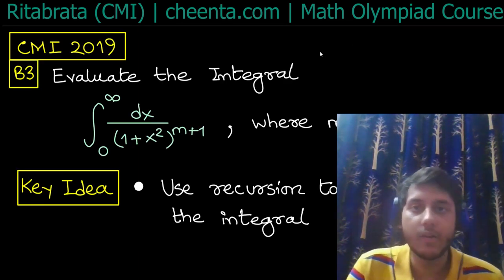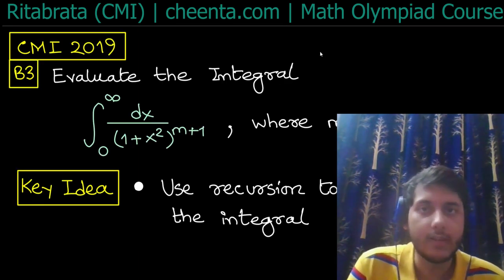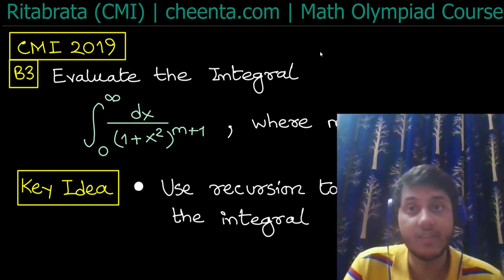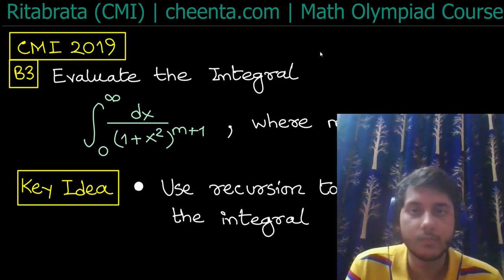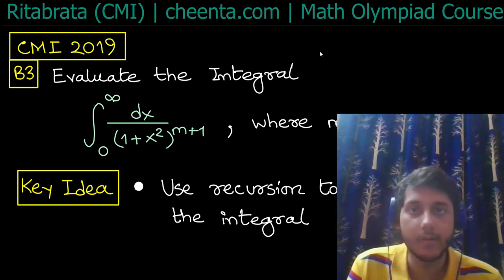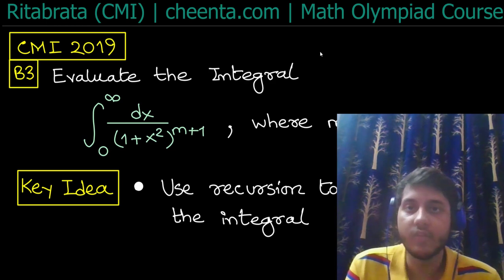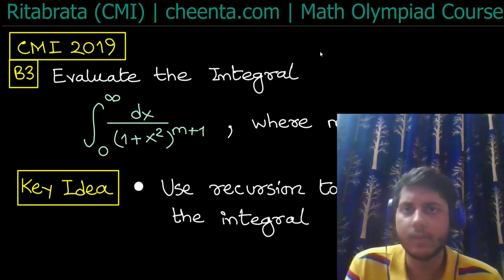Today I want to discuss a definite integral that appeared in the CMI 2019 entrance exam. There are a lot of ways to solve definite integrals — like substitution, by parts, recurrence relations. You can also use beta and gamma functions to solve some types of improper integrals.